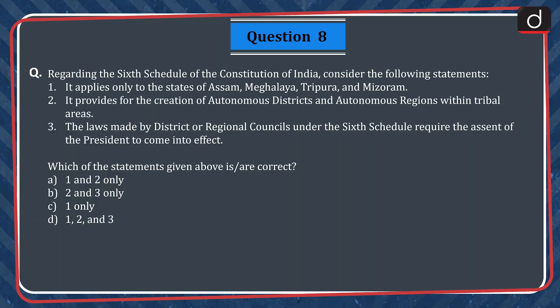Question 8. Regarding the Sixth Schedule of the Constitution of India, consider the following statements. 1. It applies only to the states of Assam, Meghalaya, Tripura and Mizoram. 2. It provides for the creation of autonomous districts and autonomous regions within tribal areas. 3. The laws made by district or regional councils under the Sixth Schedule require the assent of the President to come into effect. Which of the statements given above is or are correct?